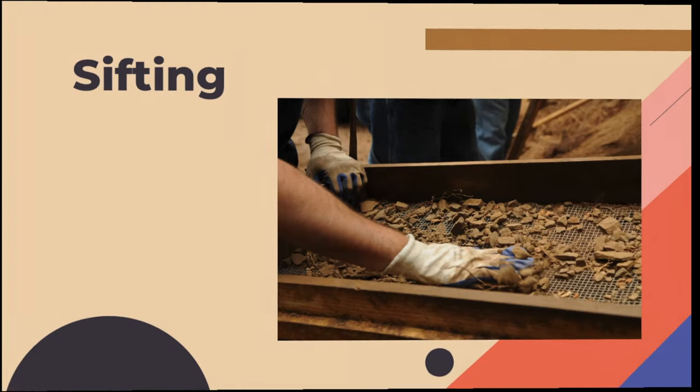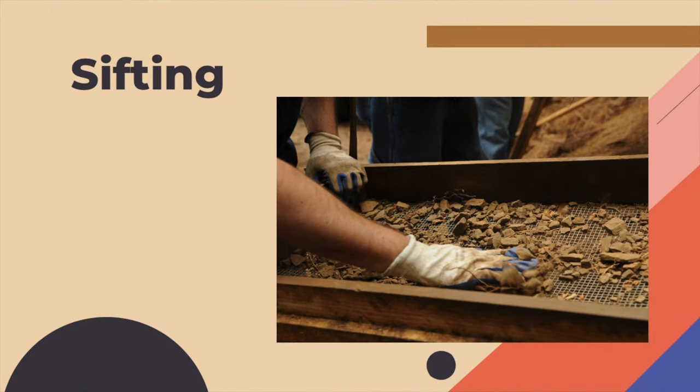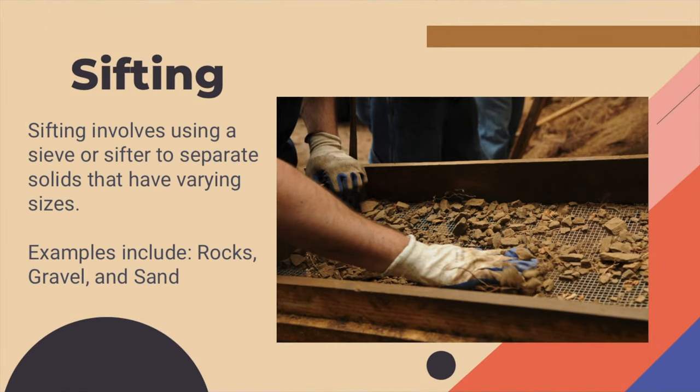The first one we're going to talk about is sifting. Sifting involves using a sieve or sifter to separate solids that have varying sizes. So a mixture of rocks, gravel, and sand could be sifted to separate that mixture.